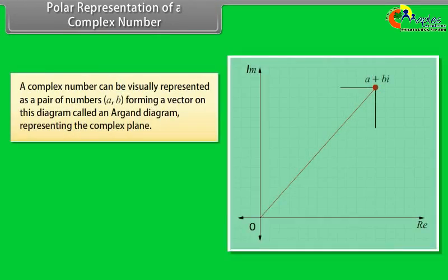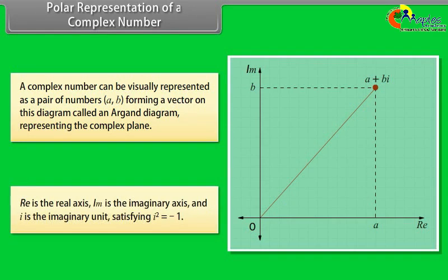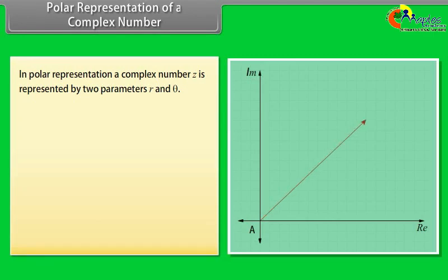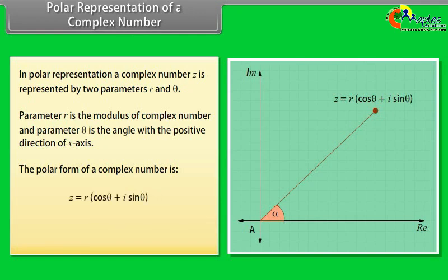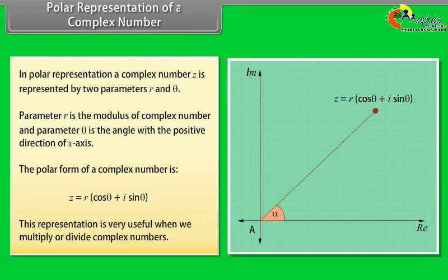Polar representation of a complex number. A complex number can be visually represented as a pair of numbers (a, b) forming a vector on the Argand diagram, which represents the complex plane. Re is the real axis, Im is the imaginary axis, and iota is the imaginary unit satisfying iota squared equals minus 1. In polar representation, a complex number z is represented by two parameters r and theta — r is the modulus and theta is the angle with the positive x-axis. The polar form is z equals r times (cos theta plus iota sin theta). This representation is very useful when multiplying or dividing complex numbers.